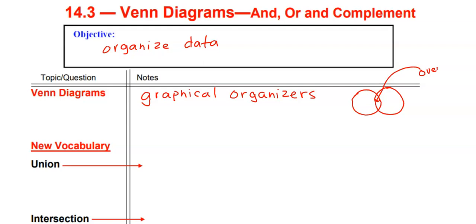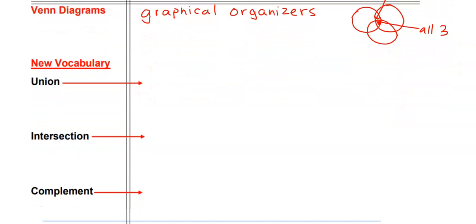Remember, where two sets overlap is the intersection region. You can add a third circle, and the total overlap of all three would be right in the center — the section that covers all three. Now let's dive into some new vocabulary words.